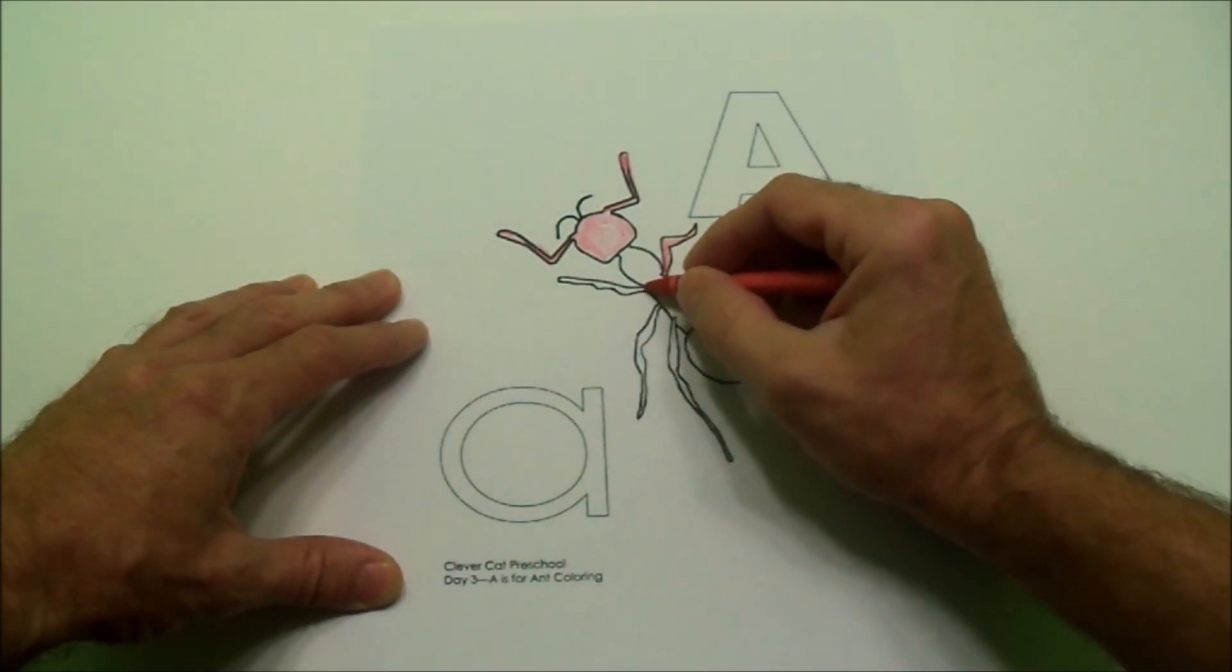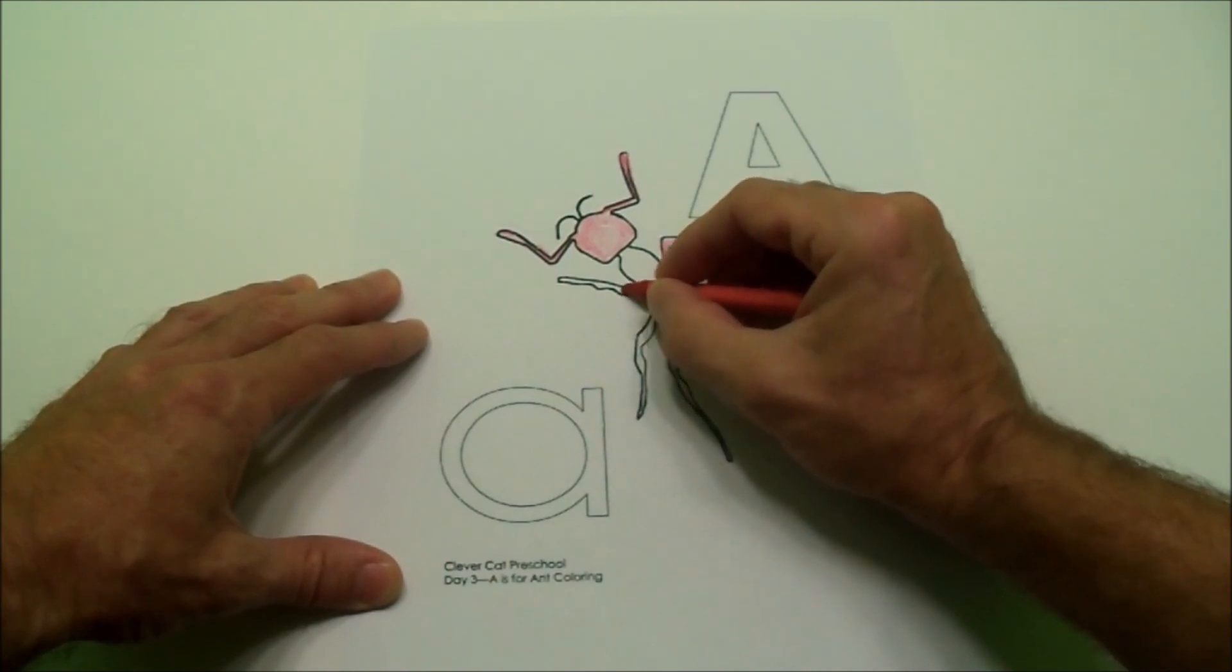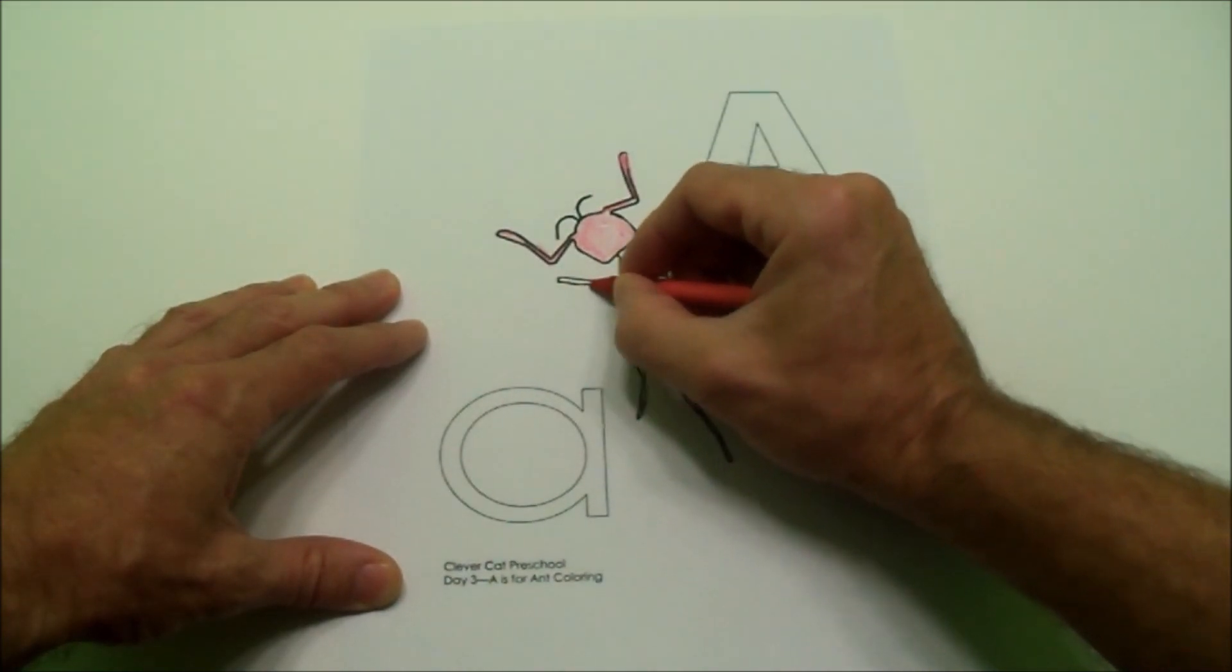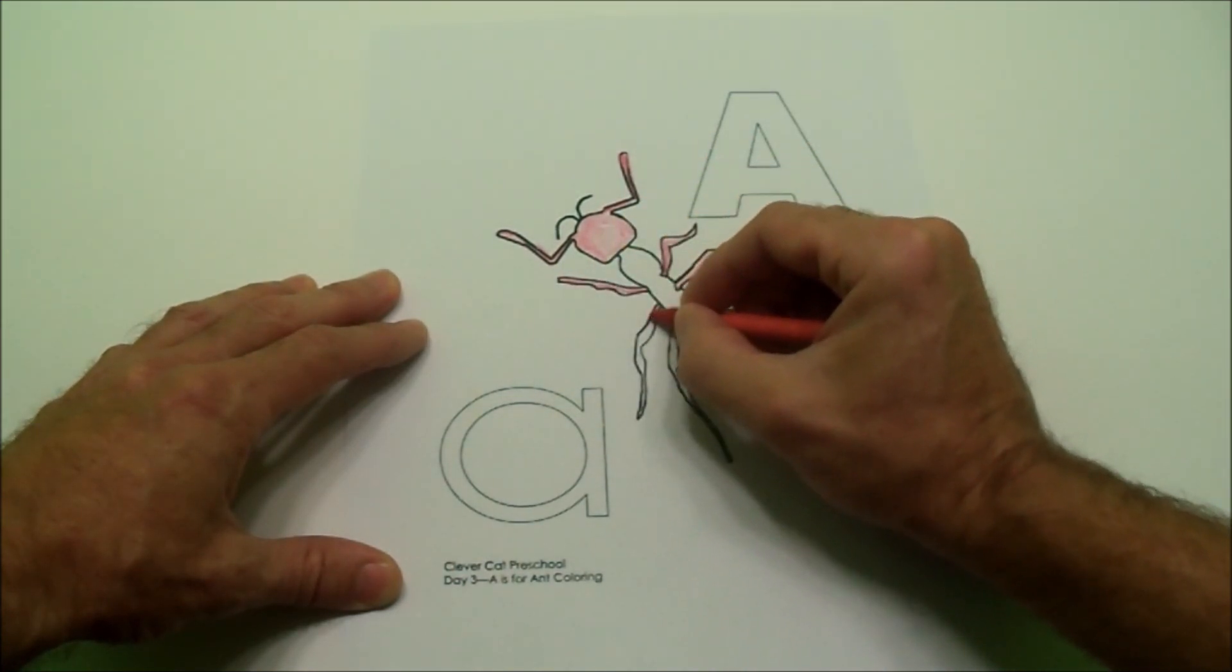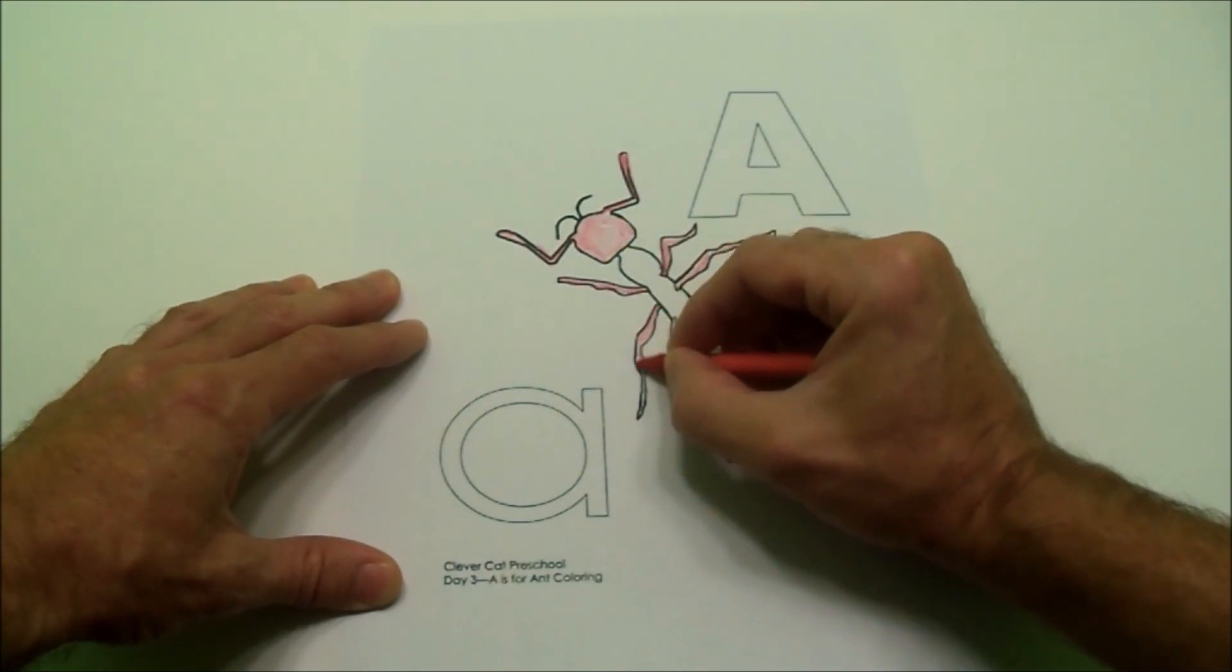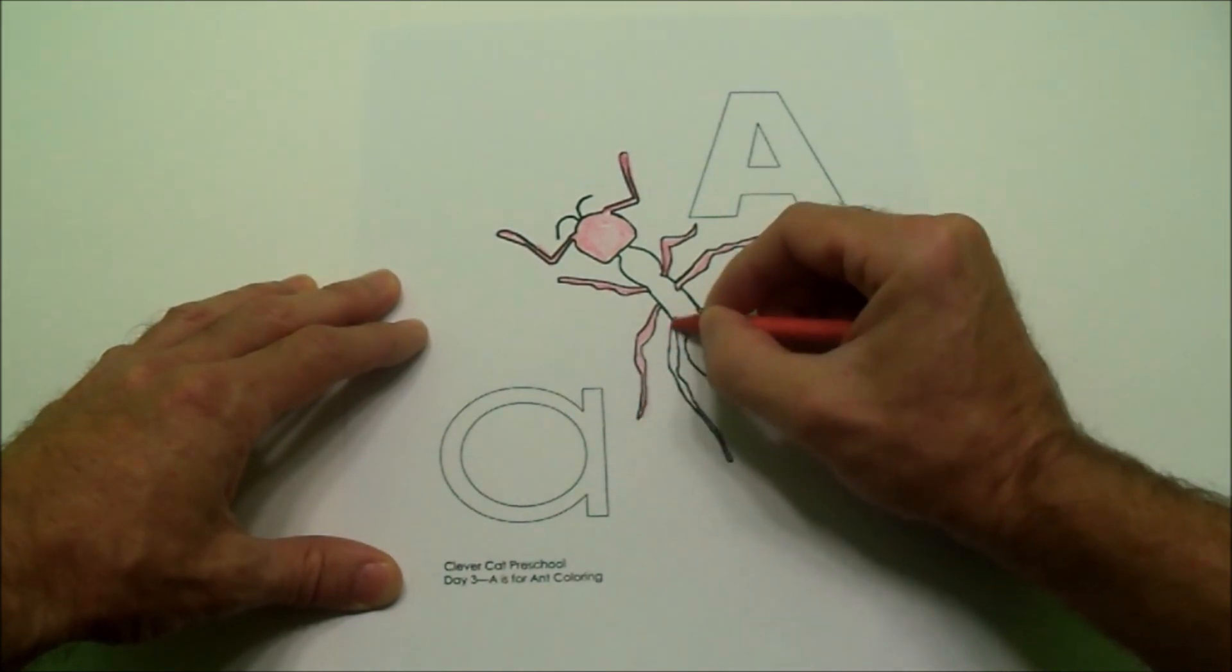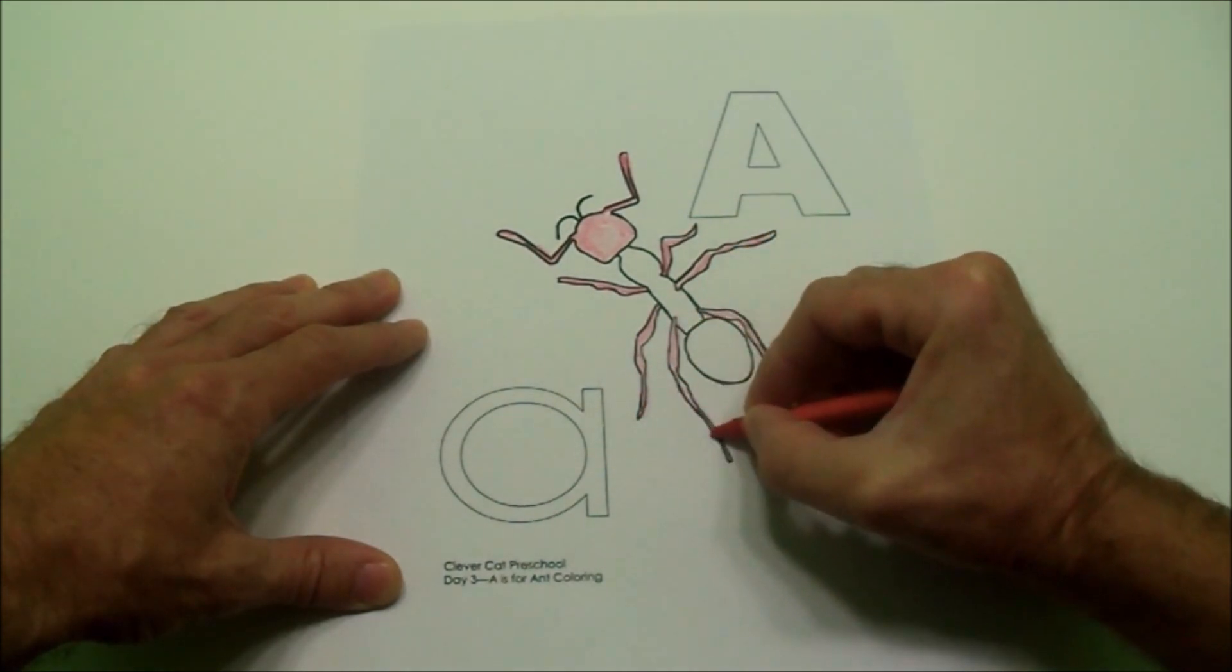Now I will move back to the other side, the left side, and color the legs. Across, like that. Now I am going down on the next leg, and down on the next leg.